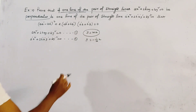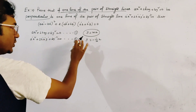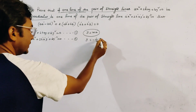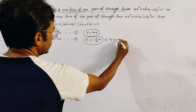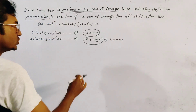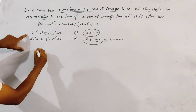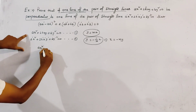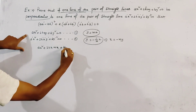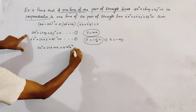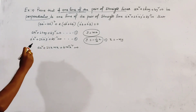Since y = mx is a line from pair 1, it must satisfy equation 1. The second line y = (-1/m)x must satisfy equation 2, which can be written as x = -my. Putting y = mx in equation 1, we get ax² + 2hx(mx) + b(mx)² = 0, which simplifies to ax² + 2hm x² + bm²x² = 0.